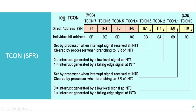Whenever external interrupt 0 has occurred, the IE0 bit will become 1 to indicate that external interrupt 0 has occurred. Whenever the program counter jumps to the ISR, this bit is automatically cleared by the CPU. IE1 bit is for external interrupt 1. Whenever external interrupt 1 has occurred, this bit becomes 1 to indicate that the interrupt has occurred, and whenever the CPU jumps to the ISR, this bit is automatically cleared by the CPU.